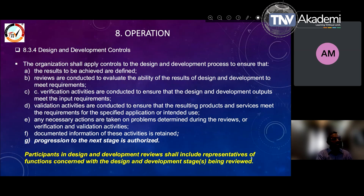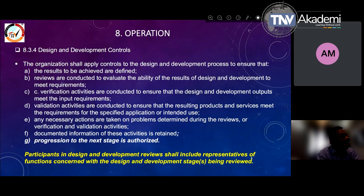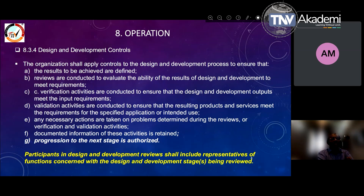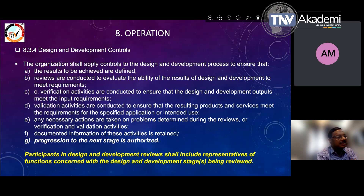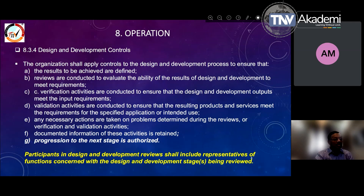We will now come to design and development control. Design and development control applies specific checks and balances to ensure that design activities are successful. This includes adequate control to ensure results are defined. Reviews are conducted at each stage of design and its output. Verification activities are conducted to ensure outputs meet inputs. Validation activities ensure the resulting products and services meet the defined requirements. Problems faced during the design stage should be addressed and documented information is retained.